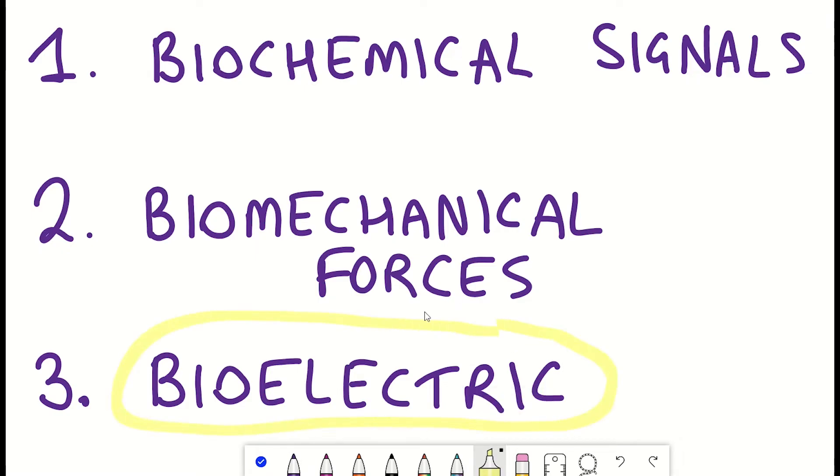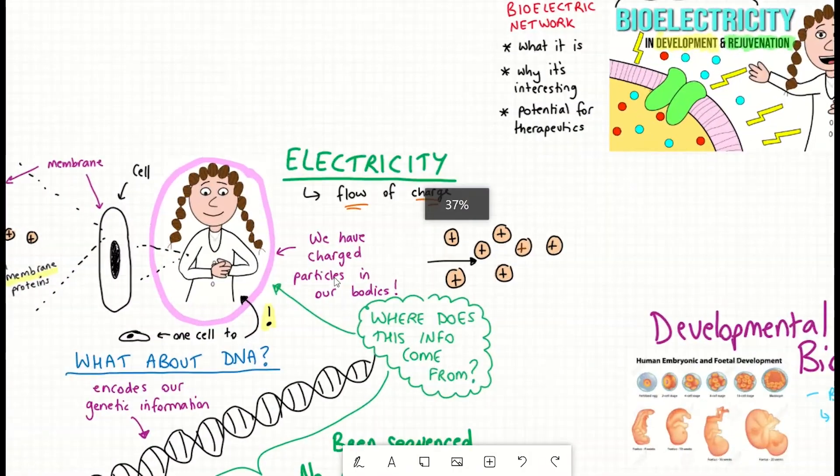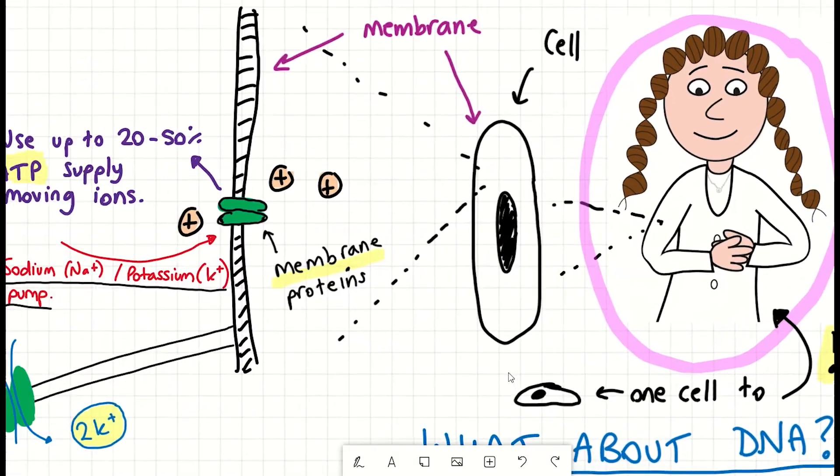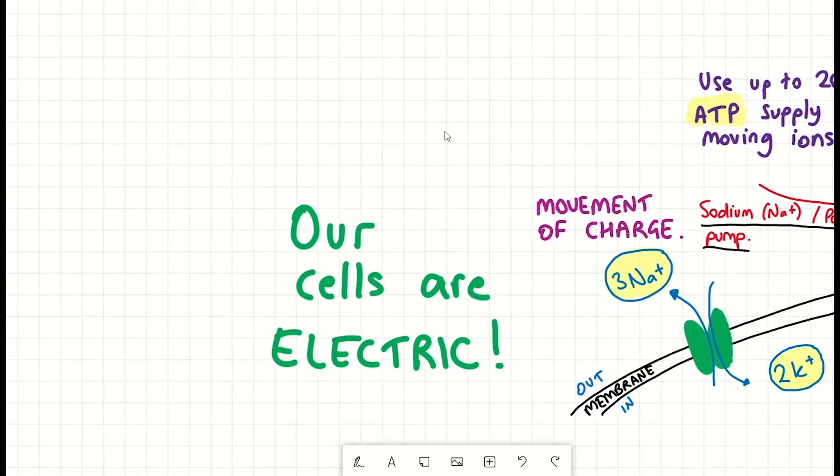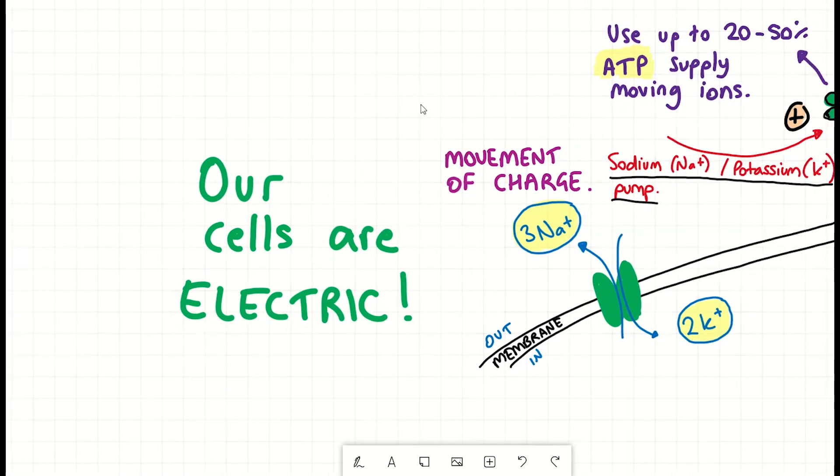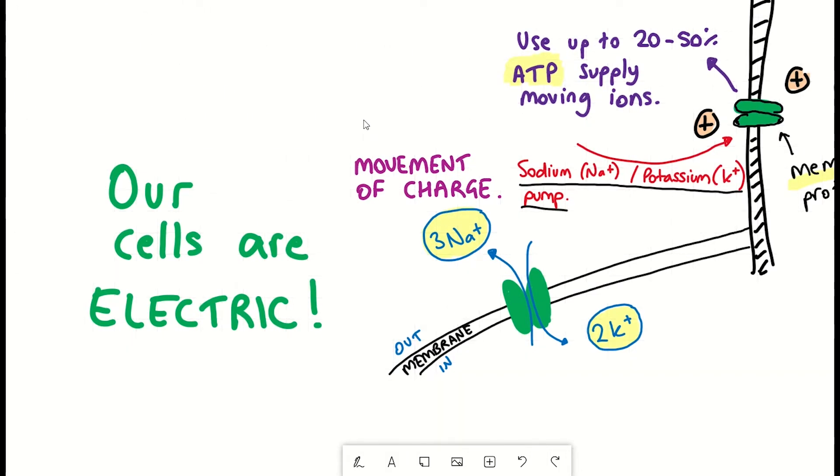And so we're going to focus on that latter strategy for the remainder of this video. So as a brief recap, we've already established that our cells are electric. And they're different from the cables that power our electrical devices, because here the electrical signals are coming from the movement of ions across the cell membrane, commonly sodium, potassium, and calcium. And this is an essential feature of all living cells.